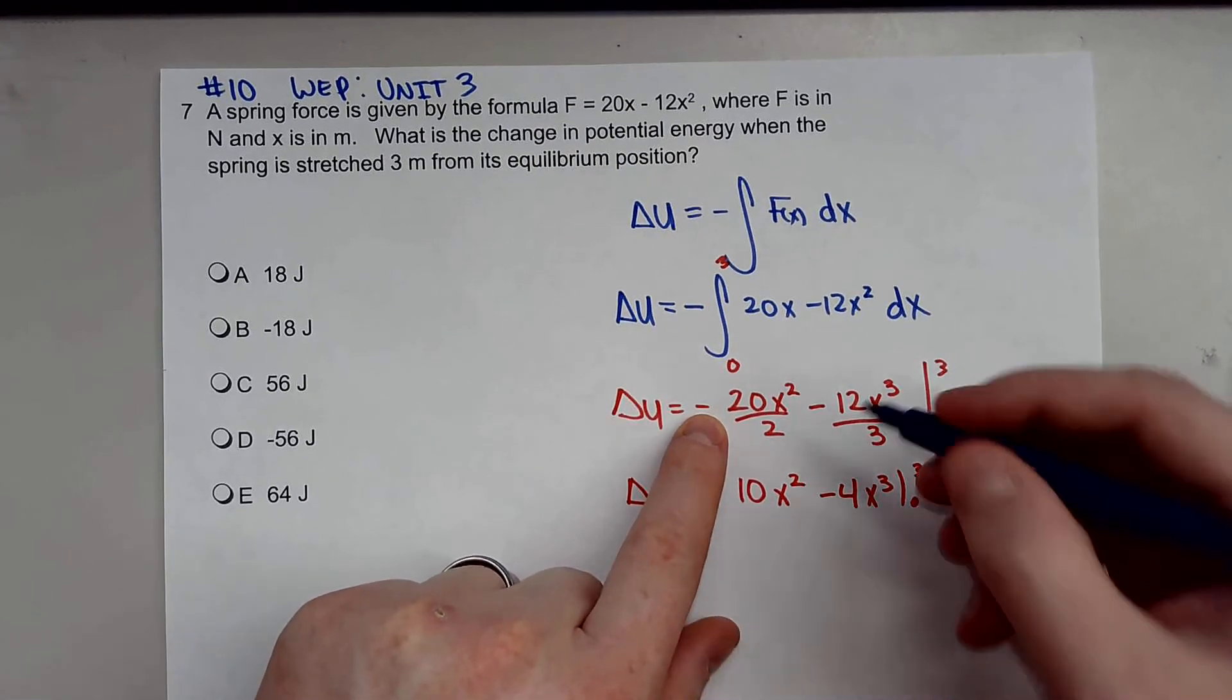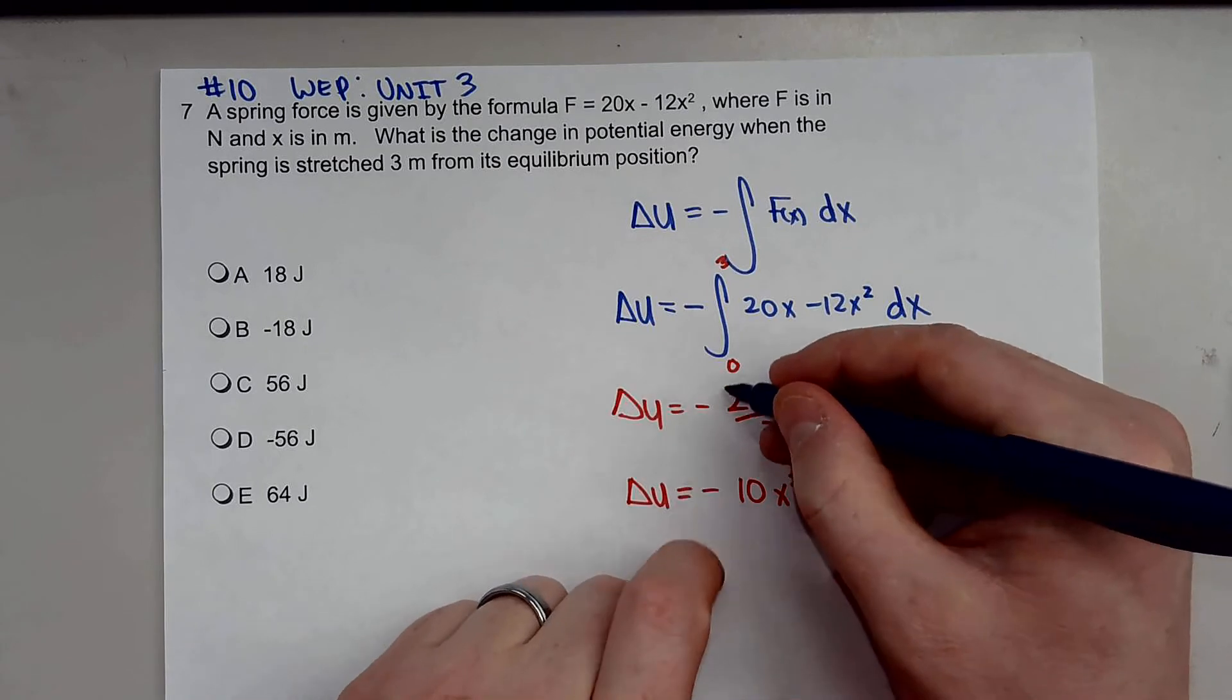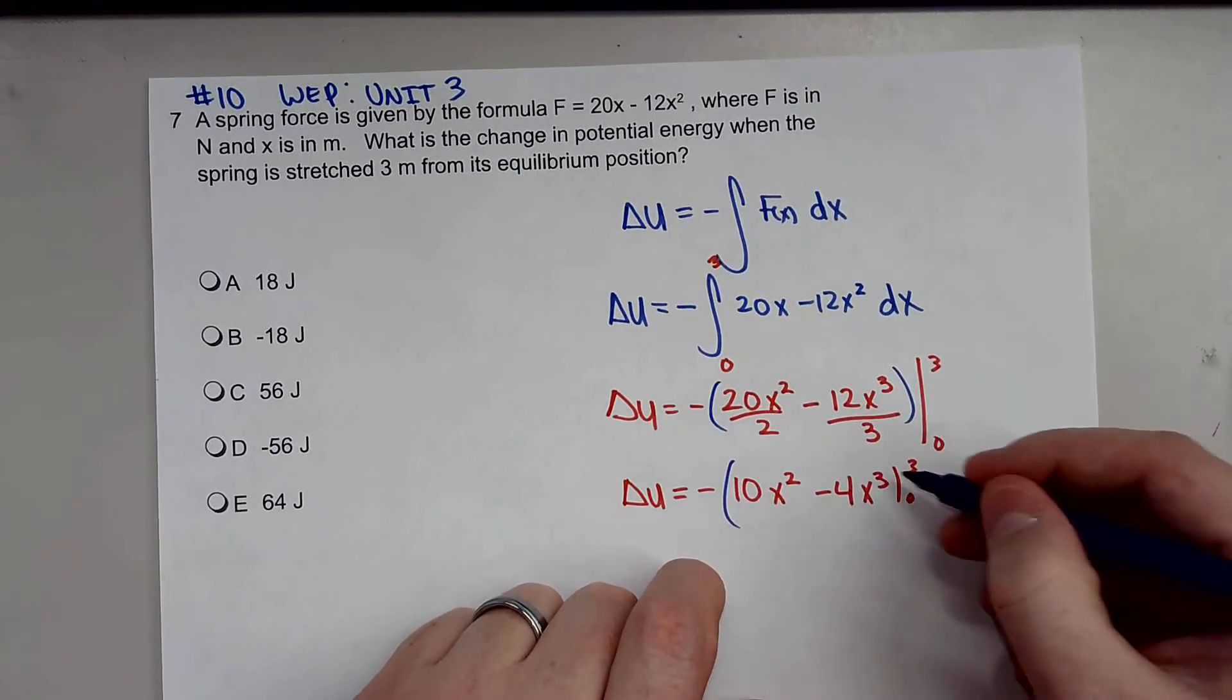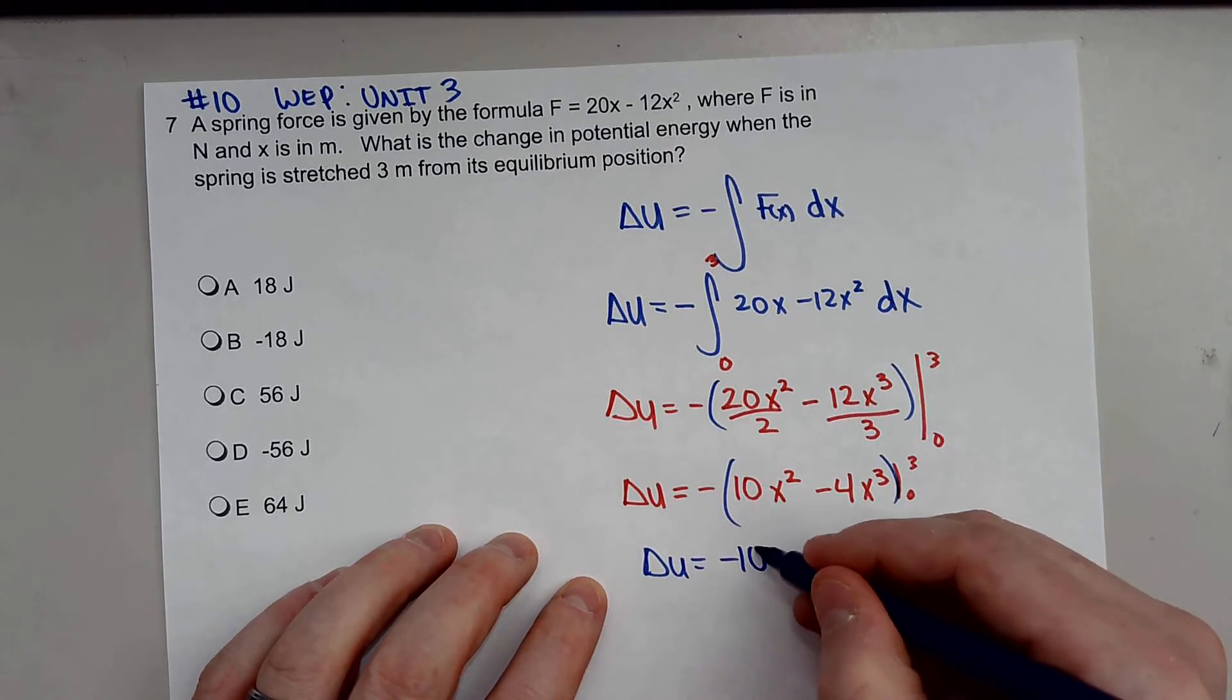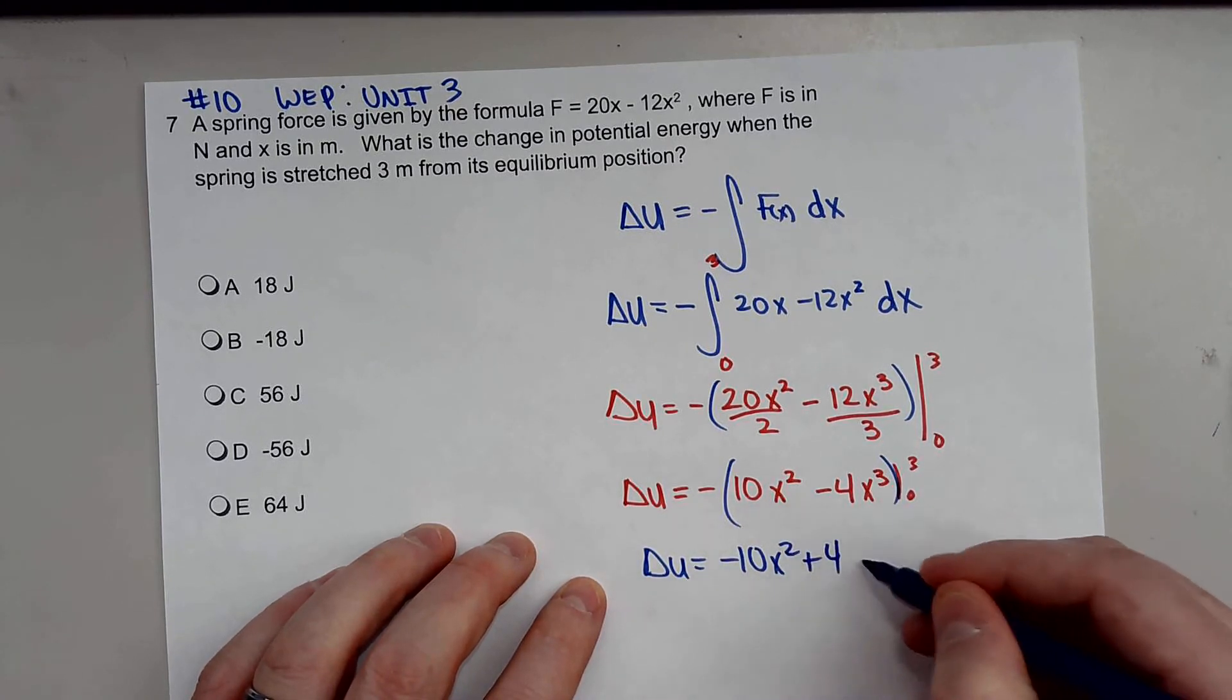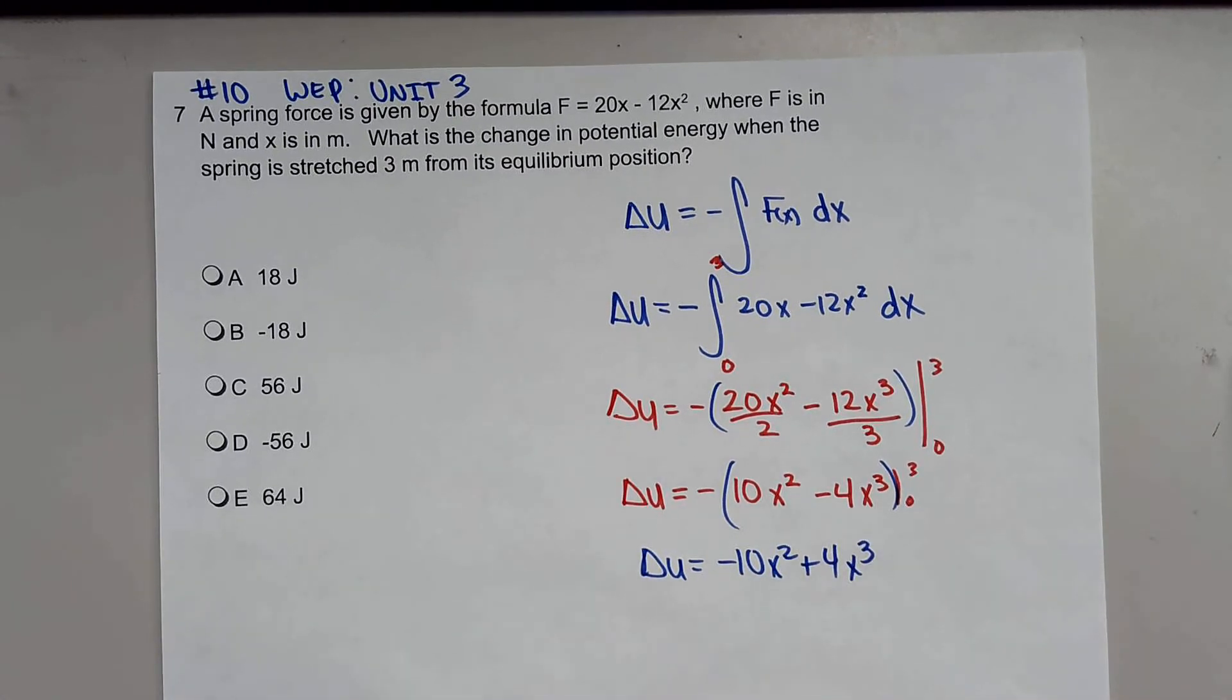I should have written it like this. If that's negative, this function actually writes out to negative 10X squared plus 4X cubed. Don't forget to flip your signs.